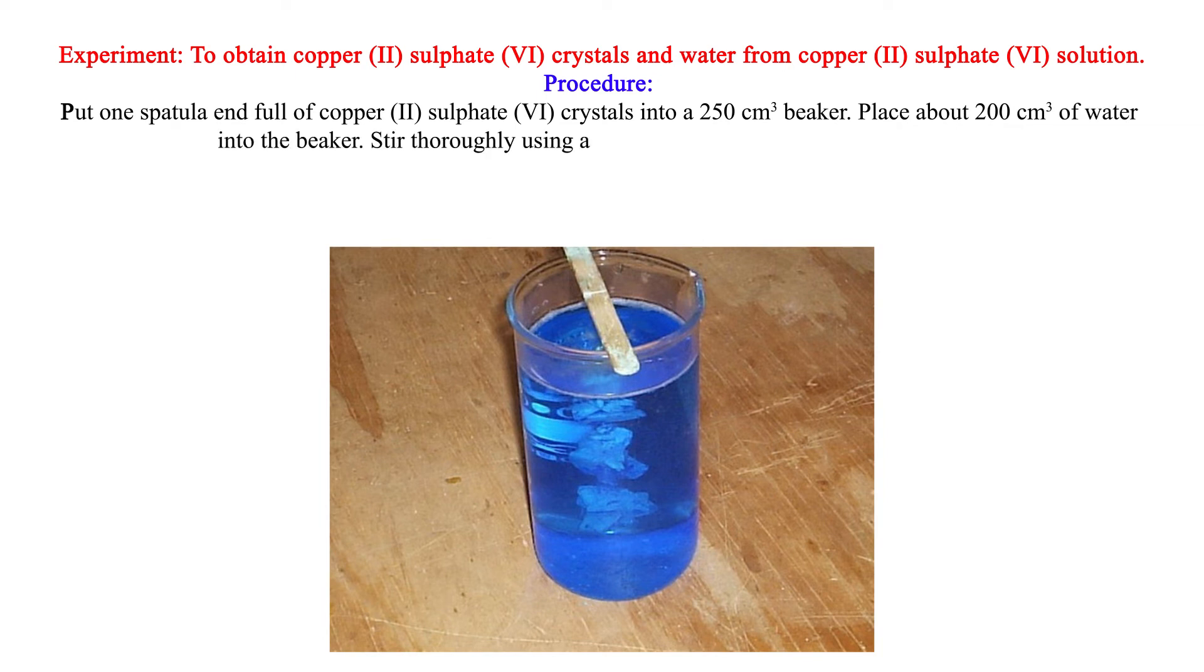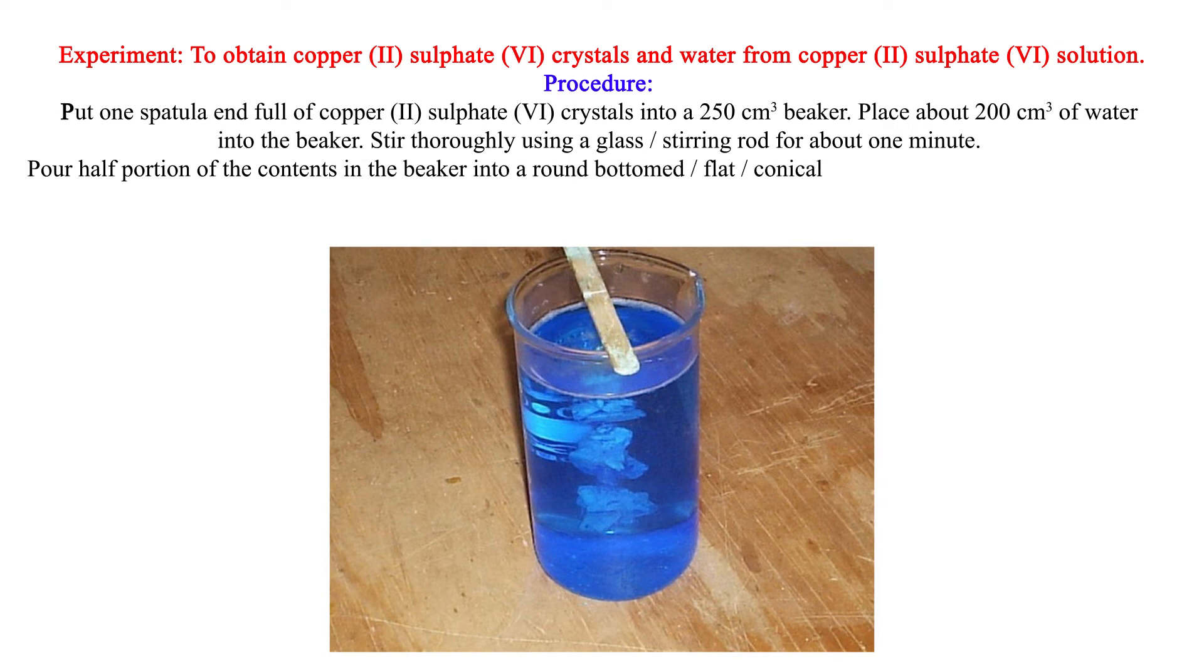Stir thoroughly using a glass stirring rod for about one minute. Pour half portion of the contents in the beaker into a round bottom, flat, or conical flask. Add broken porcelain, sand, or glass into the flask. Put a few pieces of boiling chips and stopper the flask.